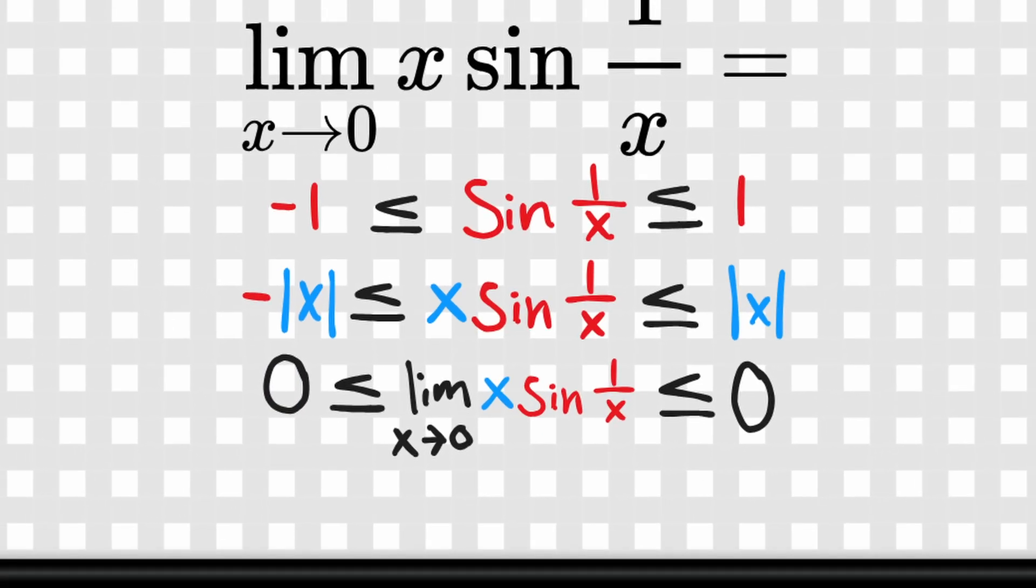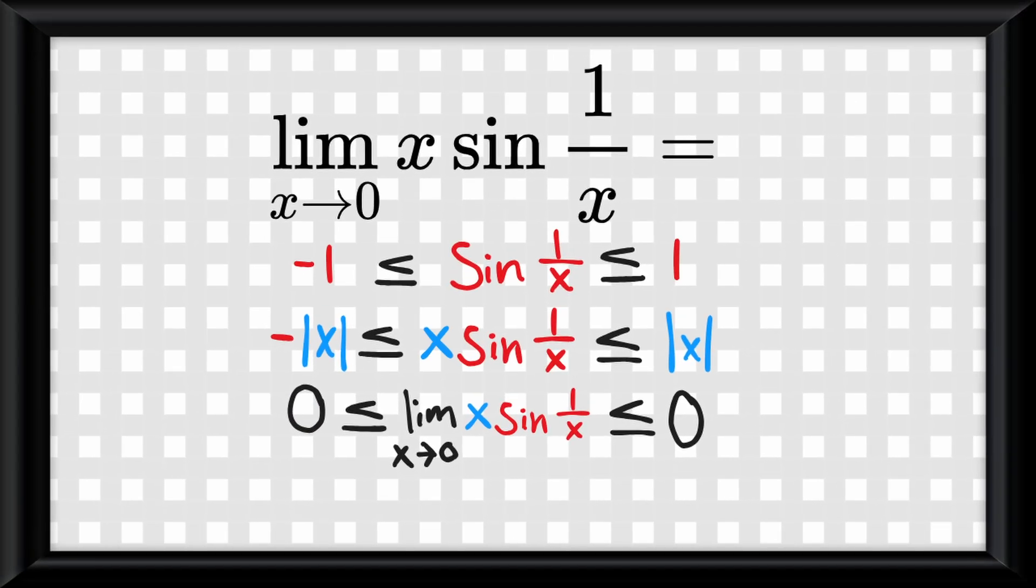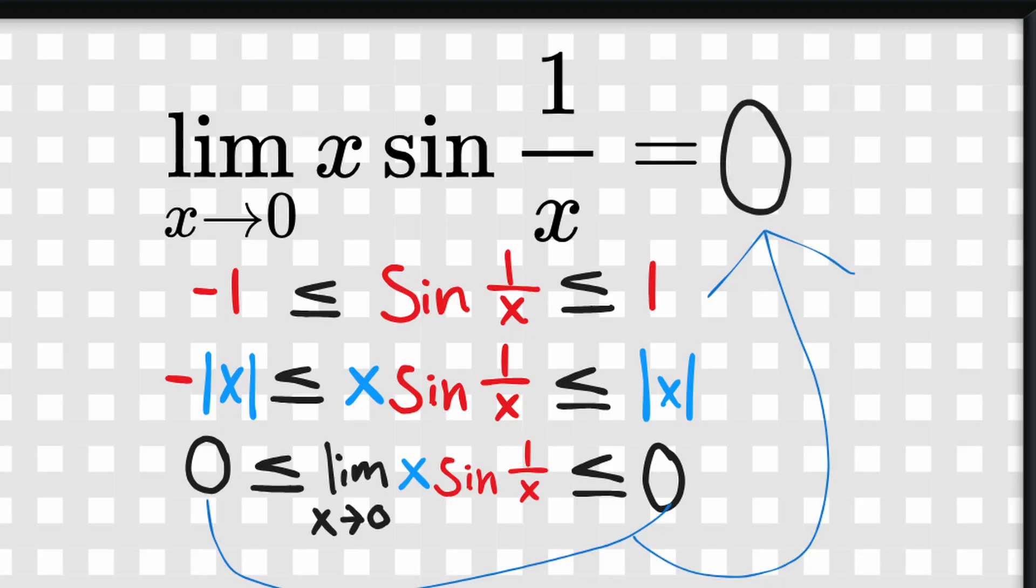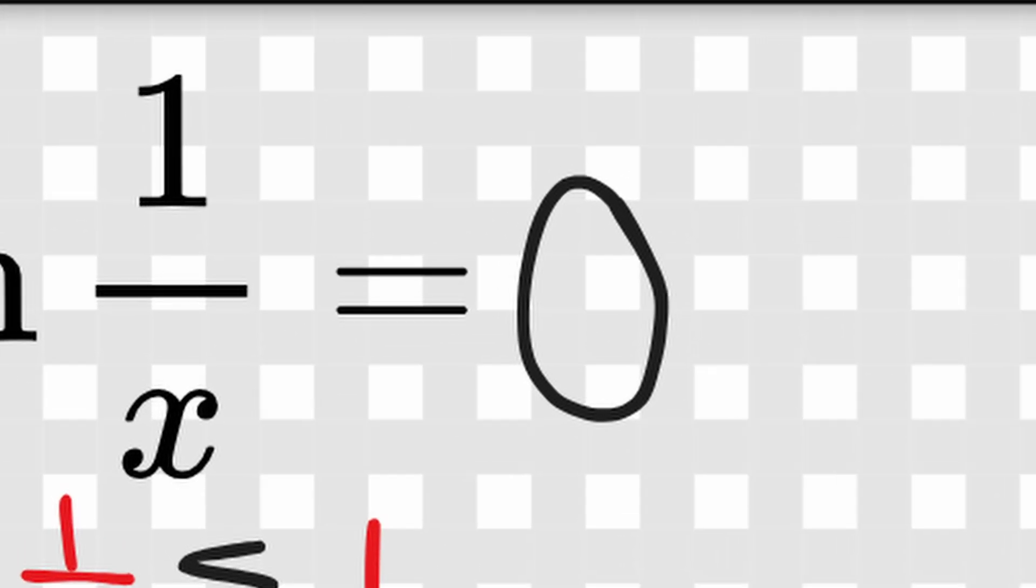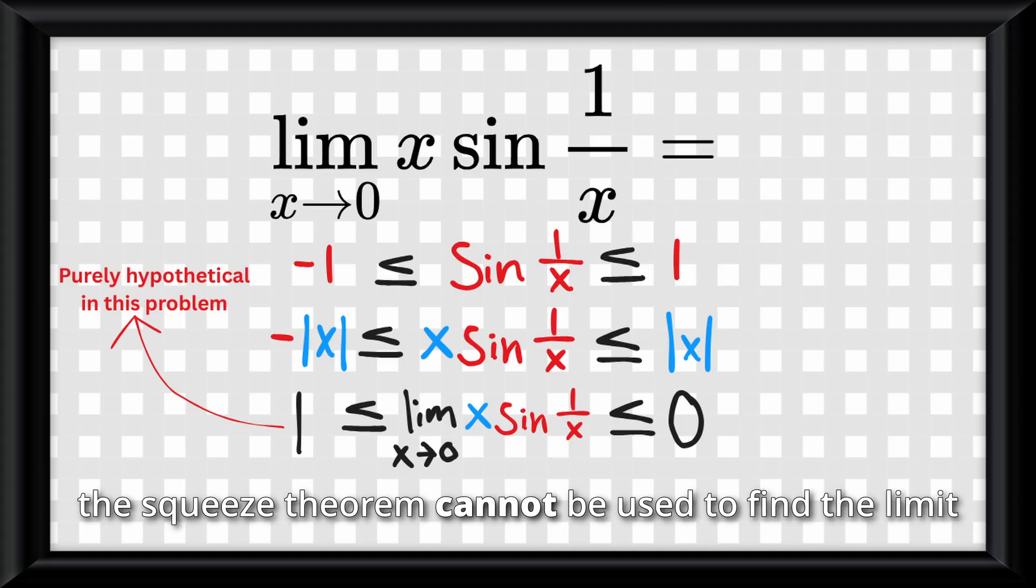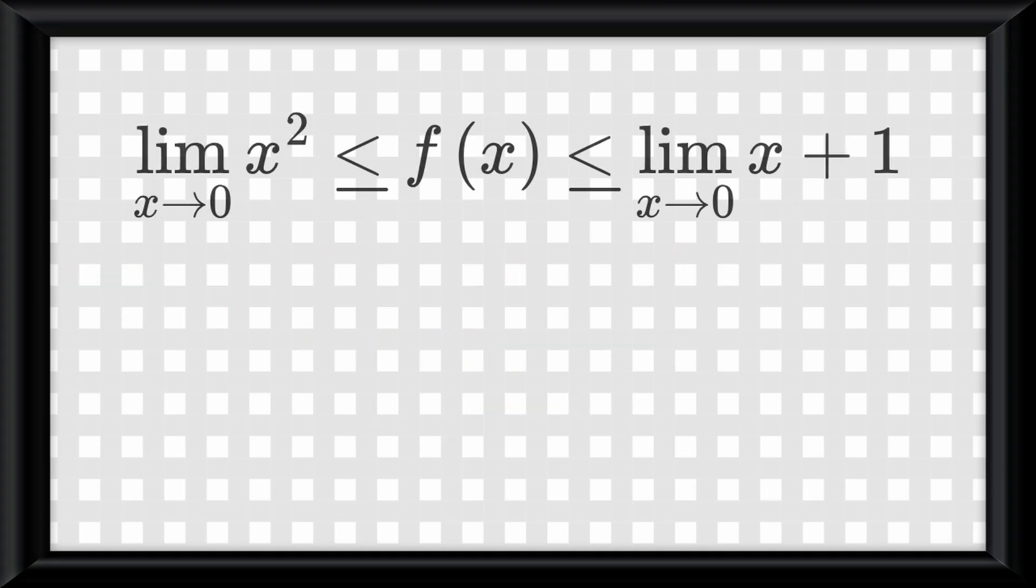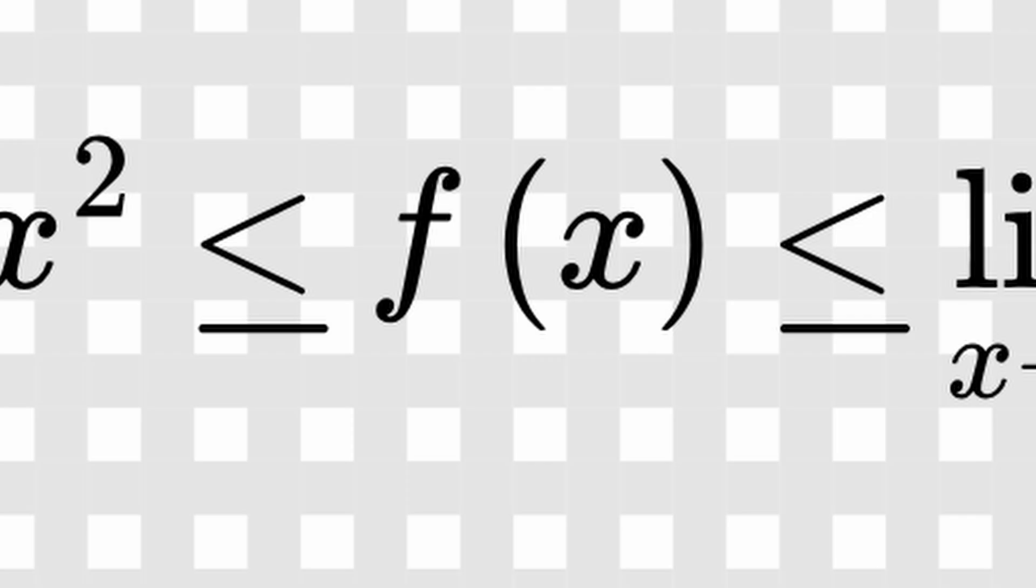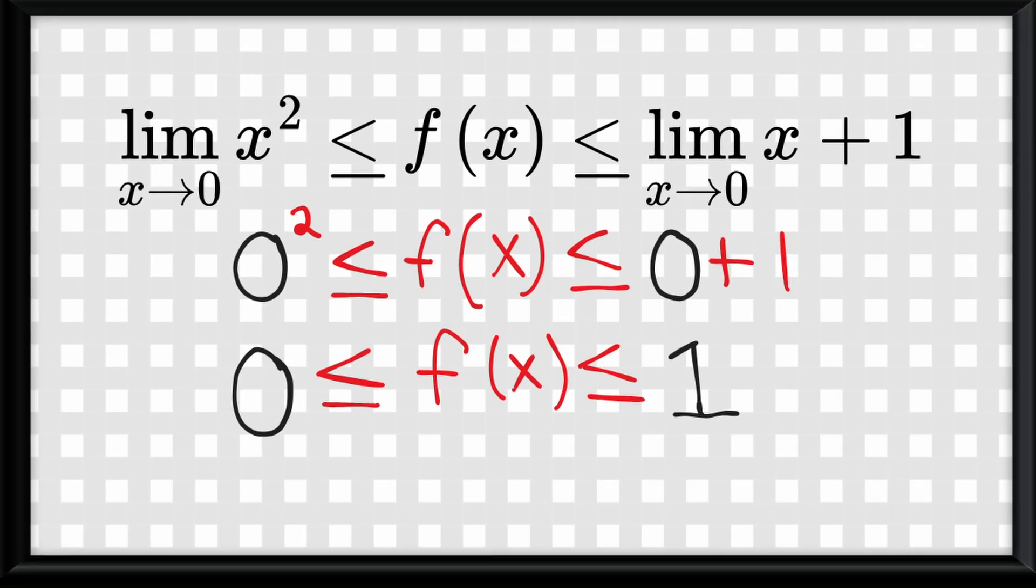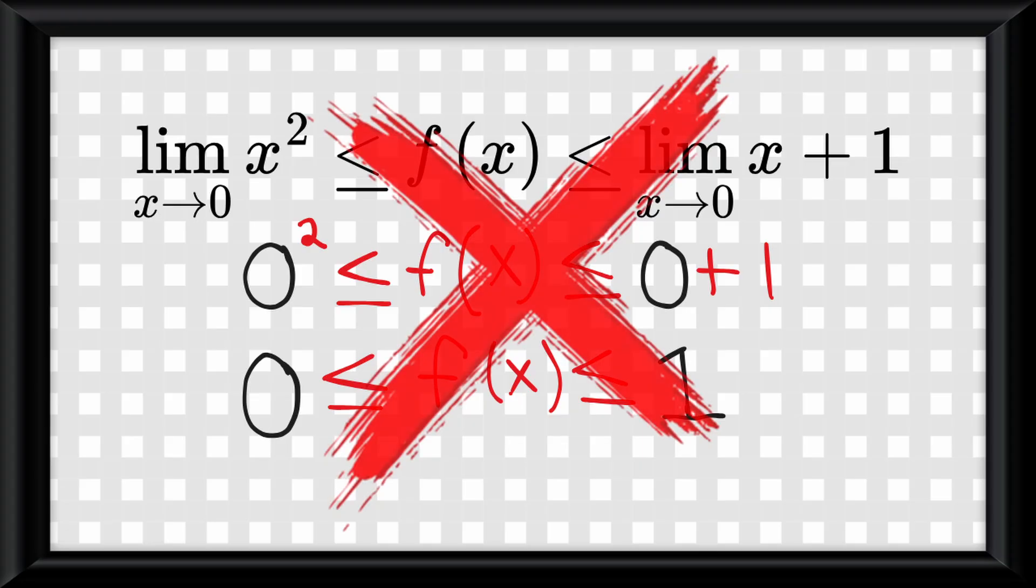So here is where our squeeze theorem comes in. The idea is that these numbers are squeezing the limit in the middle. If these two numbers are the same, then simply put, the answer is whatever the number is, or in this case, 0. If the numbers are not the same, then the squeeze theorem cannot be used to find the limit. So say that you were given functions to solve for the outer parts of the squeeze theorem to find an inner functions limit. If I were to solve those functions and get different answers, then simply put, I cannot use the squeeze theorem to find the limit.